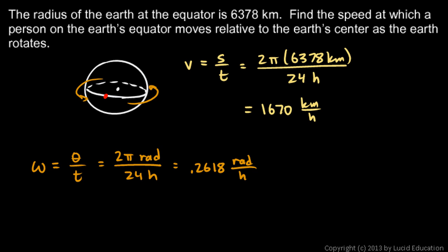And then you can say v, the linear speed, v is equal to r omega, and r is given as 6,378 kilometers, times omega, which is, let me use parentheses here,